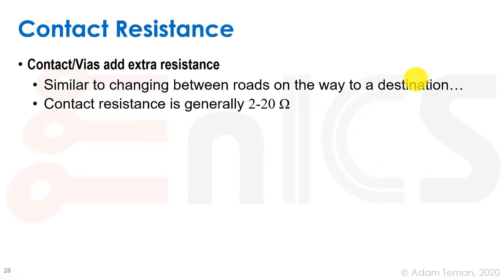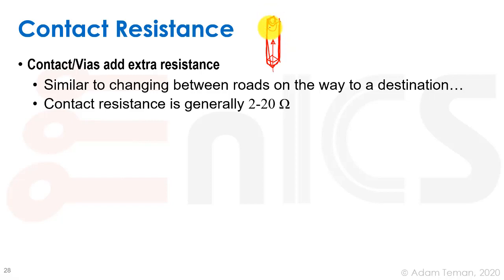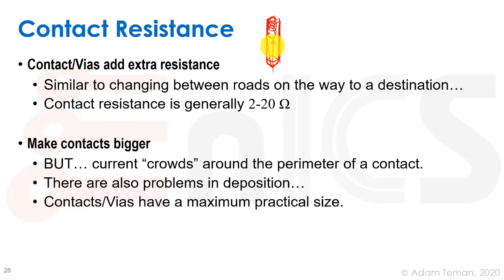Contacts and vias add extra resistance. This is similar to changing roads on the way to a destination — going straight is faster than detouring left and right. Contact resistance is generally between 2 and 20 ohms. These contacts have a high-and-thin aspect ratio, which gives them high resistance. They also have liner and adhesive layers, and current crowds around the contacts in what we call the skin effect.